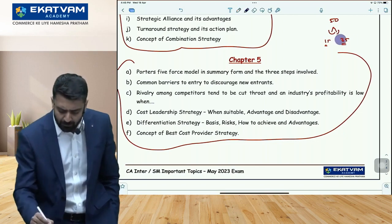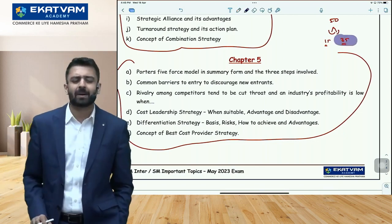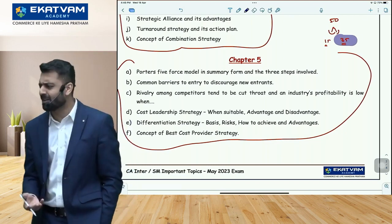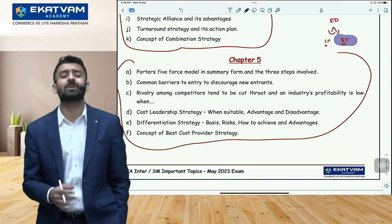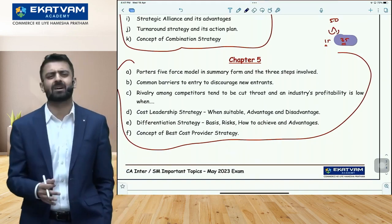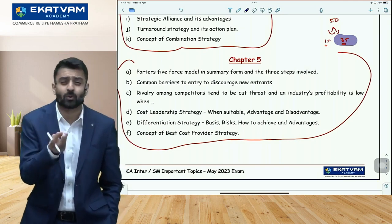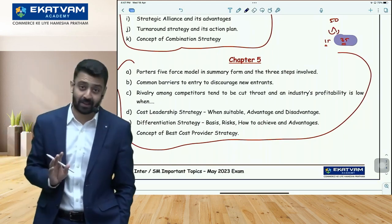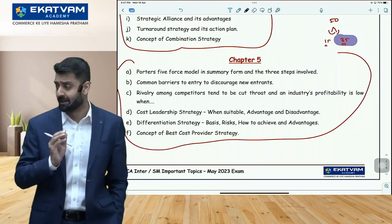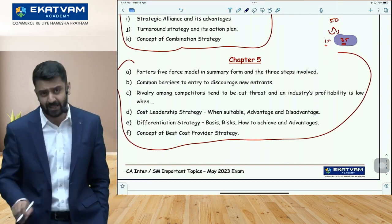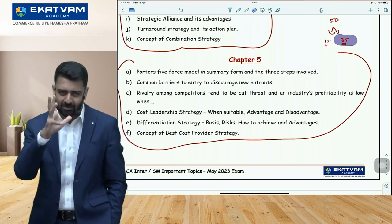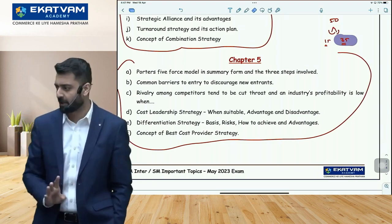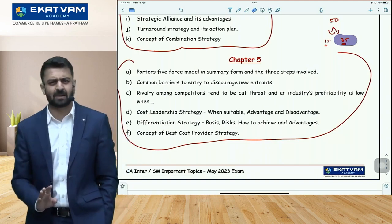Understand one thing: SM has 8 chapters for 50 marks — so 35 marks are descriptive (after 15 MCQs). With 8 chapters and 35 marks descriptive, maximum one question per chapter. So don't try to read every part of every chapter. If something is not understood or seems troubling — leave it. Have faith that what you're leaving might not come. Thinking too negatively won't help. If you feel you always leave what comes in the exam — then just read everything before going! One question will come from each chapter — don't worry about it.